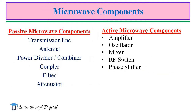Here I have listed a few examples of microwave components. They can be categorized as passive and active microwave components. Passive components include transmission lines, antennas, power dividers, combiners, couplers, filters, and attenuators. Active microwave components include amplifiers, oscillators, mixers, and phase shifters. We will discuss these components in detail in separate videos.